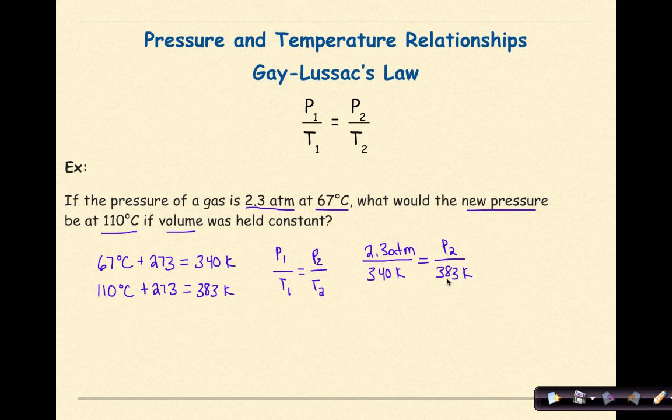So if I cross multiply and I solve for P2, I find that P2 here is going to be 2.6 atmospheres.